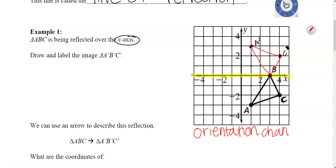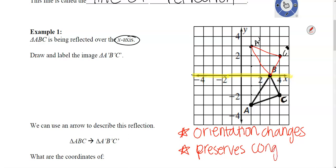What about congruency? Congruency means it stays the same size. If you look at yourself in the mirror, are you changing size? No. So reflection preserves congruency — the word 'preserve' means it doesn't change, it keeps the same size.